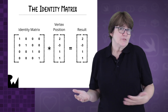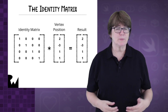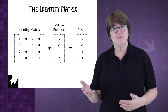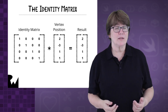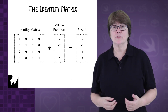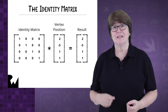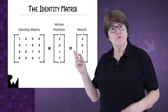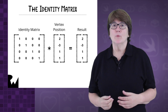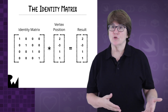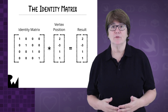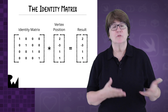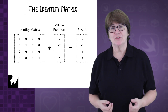It's exactly the same as if you multiply 5 by 1 — the answer is 5. Incidentally, the number 1 is an identity matrix too; it has one row and one column. If you fill out the matrix on the left with rotation or translation values, you can multiply it with a vertex position to change that vertex position.